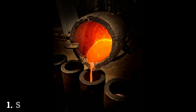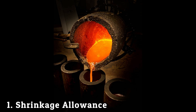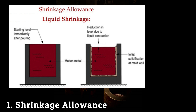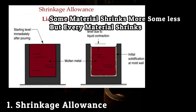The first is shrinkage allowance. Shrinkage is defined as a reduction in the dimension of casting during solidification or during cooling. This is a general property of all materials — some metals shrink more, some less, but every material shrinks.